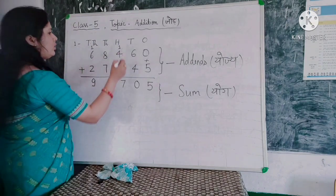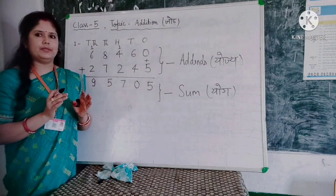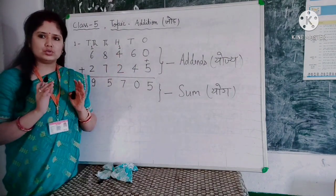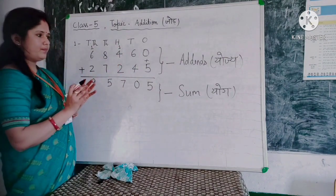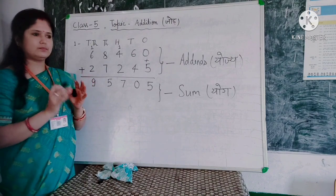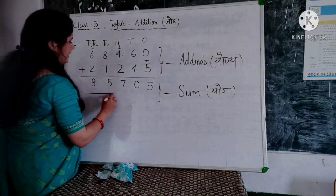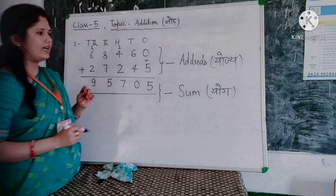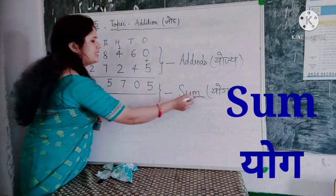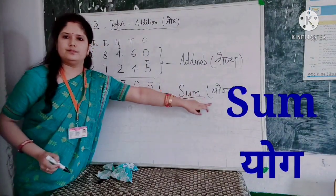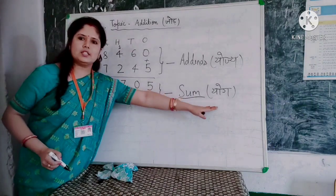It adds up: 2, 3. The answer — the result — we call the sum. The sum is your final answer.